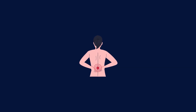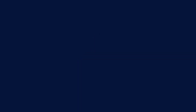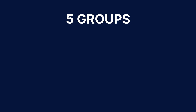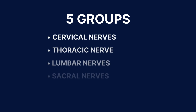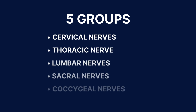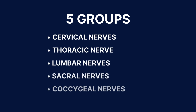The 31 pairs of spinal nerves are spread out in your body based on the region of the spinal cord they are connected to. These dermatomes are divided into five groups: the cervical nerves, the thoracic nerves, the lumbar nerves, the sacral nerves, and the coccygeal nerves.